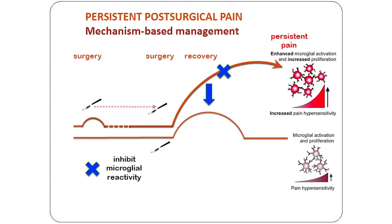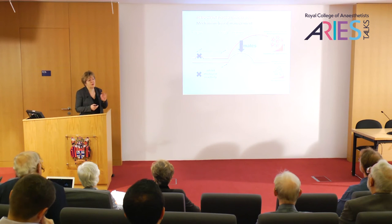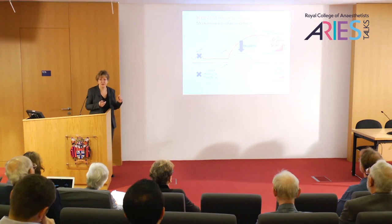We can test whether microglial activity is actually important by inhibiting it, and we do see a reduction back to normal baseline. We can also try to prevent it from very early on in life, as with the local anaesthetic, and that also brought the response back to normal — but only in males. This matches work in adult models showing a different signalling mechanism in males and females. So if we are looking at very specific analgesics or interventions, we need to consider whether those mechanisms are different in males and females, which will have a big impact on clinical trials going forward.